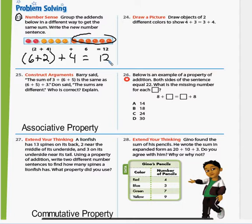24, draw a picture. Draw objects of two different colors to show four plus three equals three plus four. So you can just take two different colors. You can use your crayons to answer that one. And it's pretty simple. You should be able to answer that one.